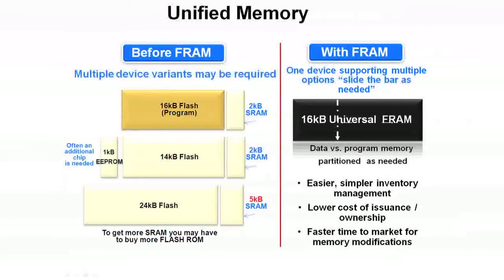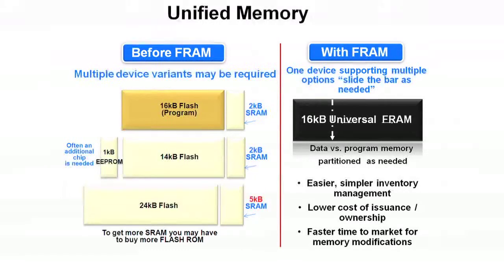The concept of unified memory: before FRAM, you would have to buy multiple device variants — for instance, a 16K program and 2K SRAM device, possibly needing an additional 1K EEPROM, or buying more flash just to get more SRAM. With FRAM, one device can support multiple options. You can slide the partition bar back and forth as needed — data versus program memory can be partitioned as required. For multiple designs and uses, a single device gives you easier inventory management, lower cost of ownership, and faster time to market for memory modifications.